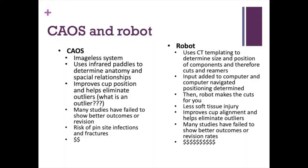Just like in total knee replacement, computer-assisted and robotic-assisted orthopedic surgery exist for total hip as well. They can help reproduce anatomy better, but what is optimal cup position remains poorly understood due to the complex interplay between spinal-pelvic mechanics. These systems are also very expensive and add significant complexity to the case, so they aren't as well adopted — especially with anterior hip approaches now able to utilize fluoroscopy for optimal positioning.